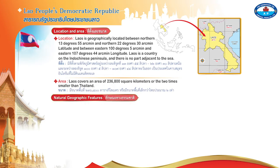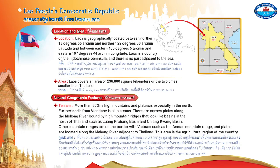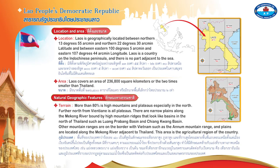National Geographic Features — Terrain: More than 80 percent are high mountains and plateau, especially in the north. Further north from Vientiane is all plateau. There are narrow plains along the Mekong River bound by high mountain ridges that look like basins in the north of Thailand, such as Luang Prabang Basin and Chiang Quang Basin.